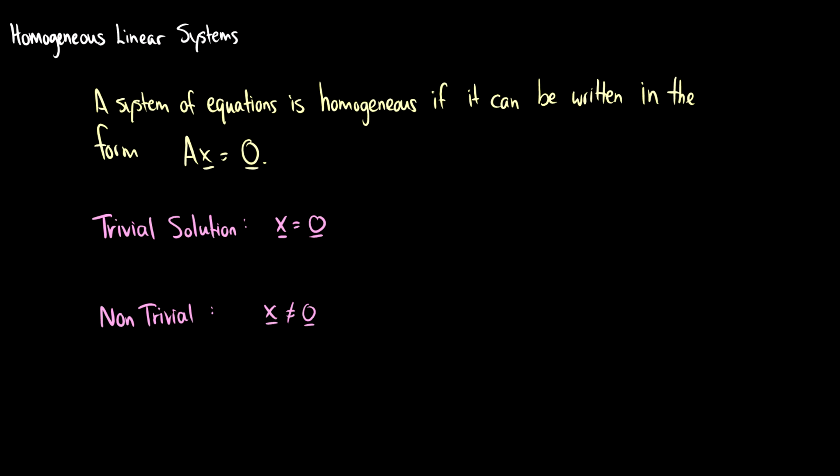In this video we're going to talk about homogeneous linear systems. So what is that? Well, we say a system of equations is homogeneous if it can be written in the form Ax is equal to 0.